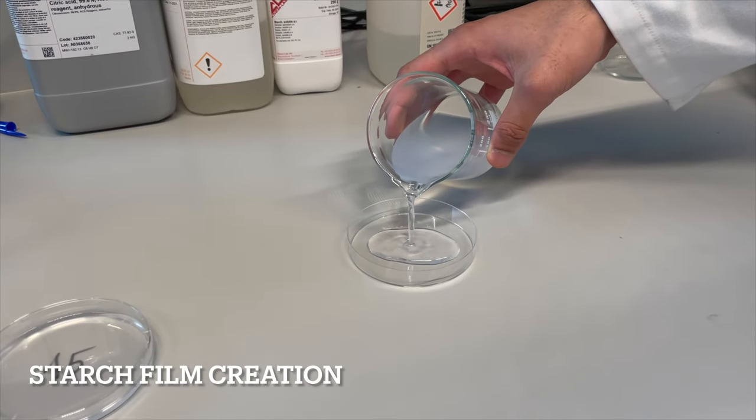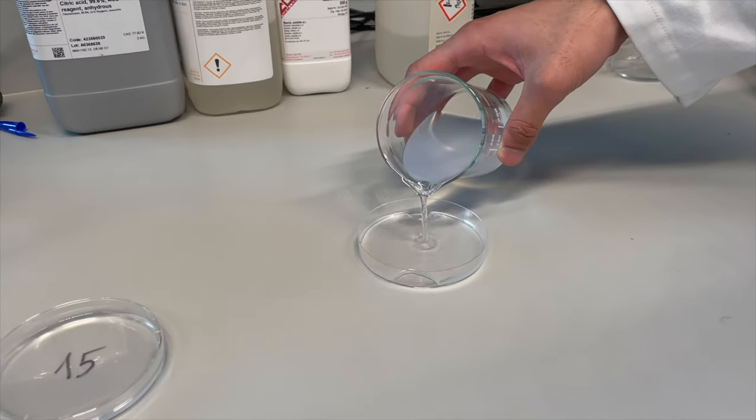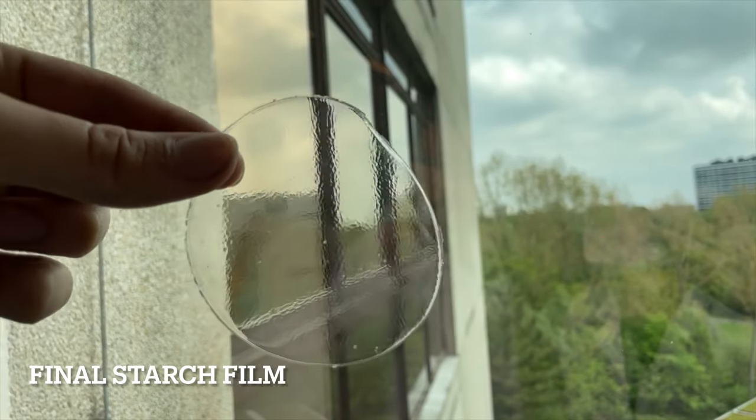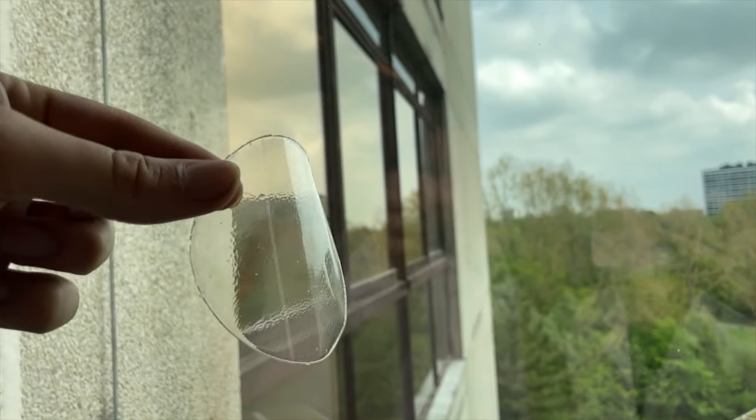A tape consists of a carrier and an adhesive. The carrier was made by combining starch, water, citric acid and glycerol. If you put them in the oven, you get a flexible, clear plastic-like film.